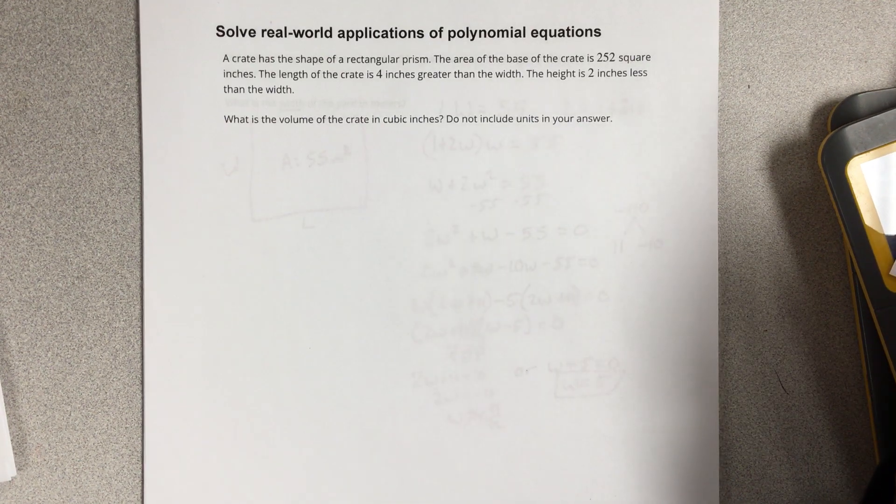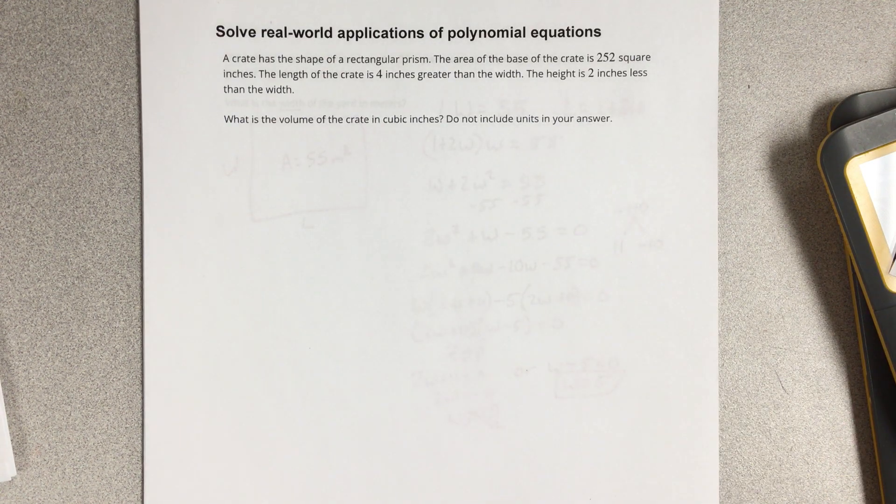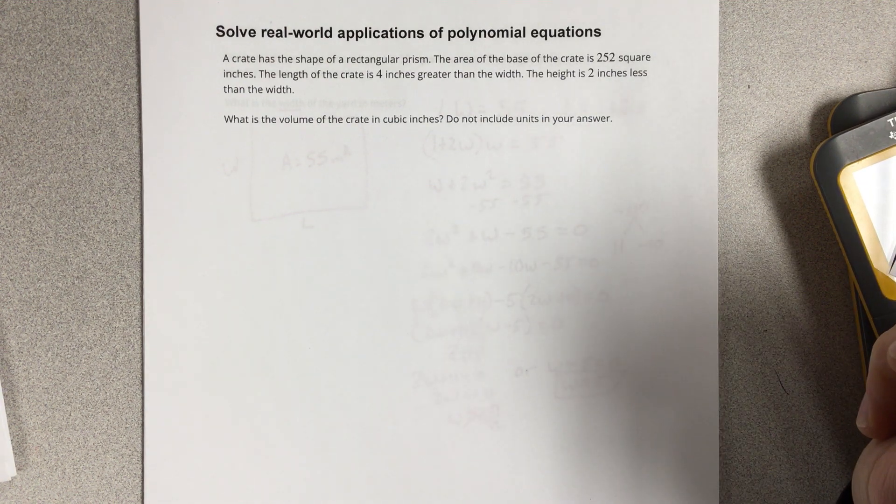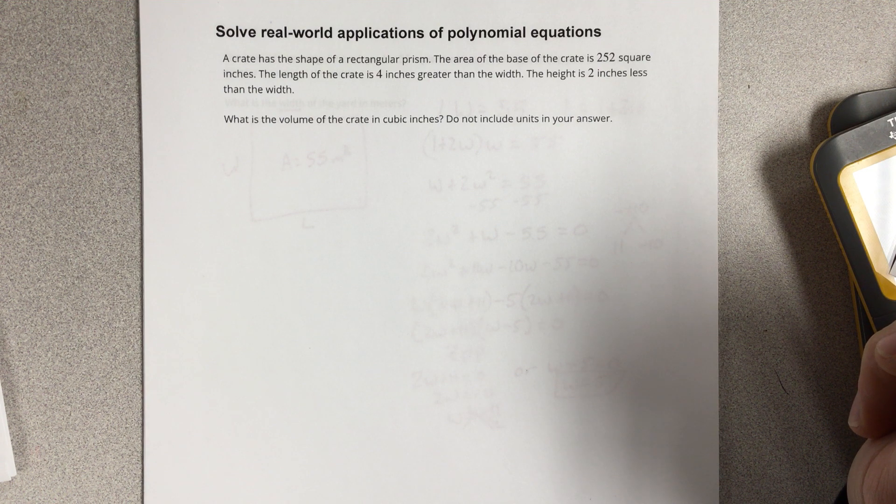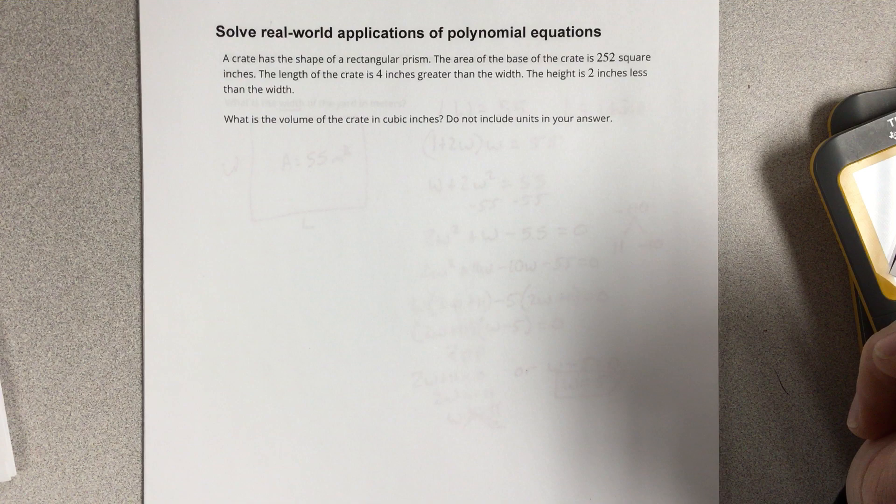In this video we're going to solve real-world applications of polynomial equations. A crate has the shape of a rectangular prism. The area of the base of the crate is 252 square inches. The length of the crate is 4 inches greater than the width and the height is 2 inches less than the width. What is the volume of the crate in cubic inches?